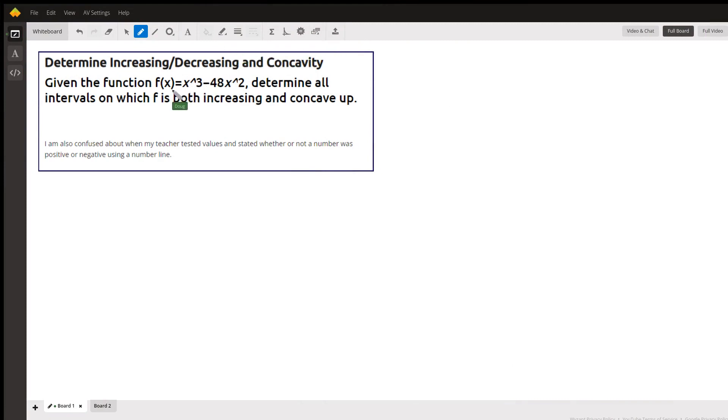Okay, you've got this function f(x) = x³ - 48x². We want to determine the intervals on which f is both increasing and concave up. We'll look at the graph on board 2 and I'll talk you through it.